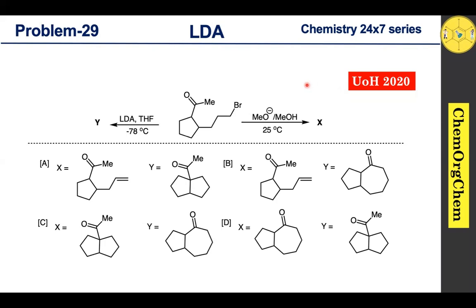...the University of Hyderabad MSc entrance exam papers. According to this question, this substrate reacts with methoxide base in the presence of methanol, which readily produces product X. At the same time, the same substrate when treated with LDA under minus 78 degrees Celsius produces product Y. There are four options — let's find out the correct one together.